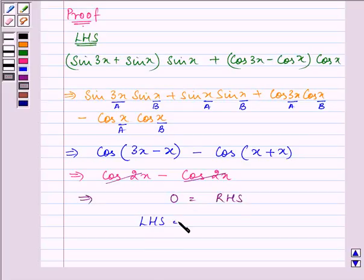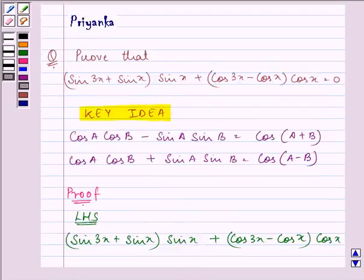So, LHS is equal to RHS and hence we have proved the given statement by using these two identities. I hope you enjoyed the session and do remember your identities well before proceeding with the solution. Bye for now.